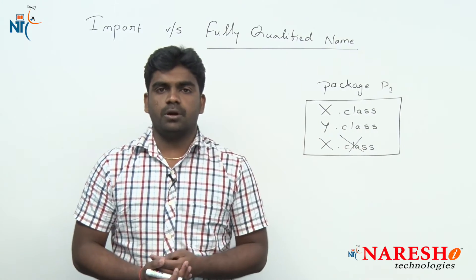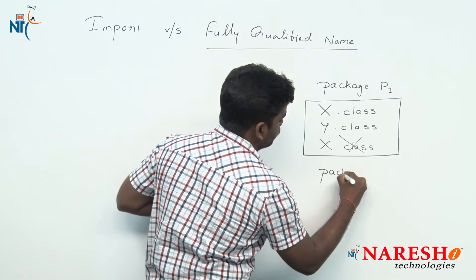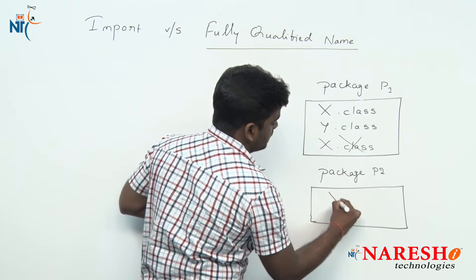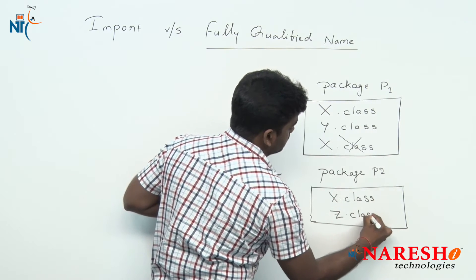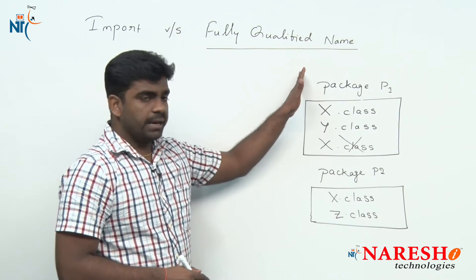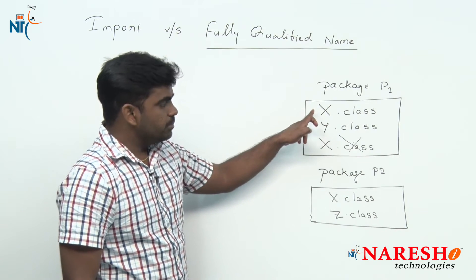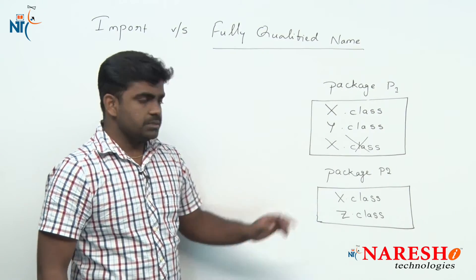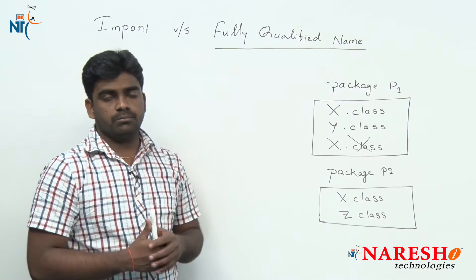To overcome this problem, simply create another package — another folder, package p2. Inside p2 we can place class X and another class Z. So we have two packages, p1 and p2, and X class is available in both p1 package and p2 package.